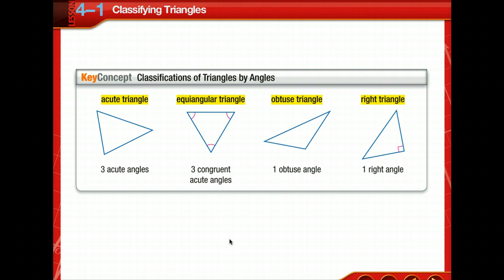Triangles can be classified in two ways, by their angles and by their sides. All triangles have at least two acute angles, but the third angle is used to classify the triangle. Now, something to remember when you're classifying triangles, be as specific as possible. While a triangle with three congruent angles is an acute triangle, it is more specific to classify it as an equilangular triangle.